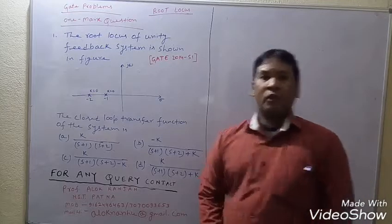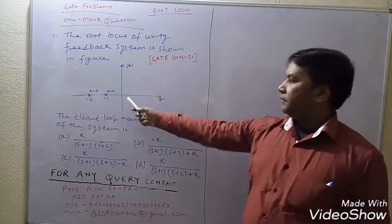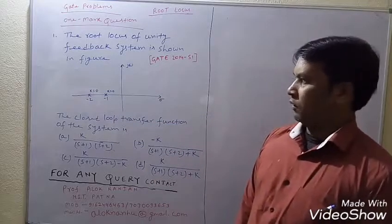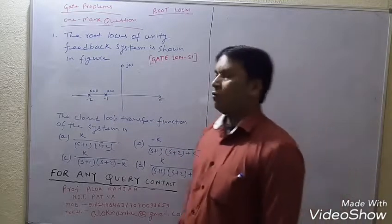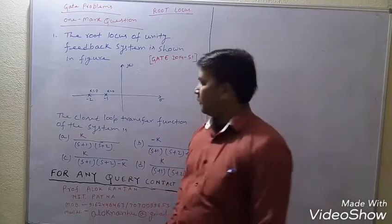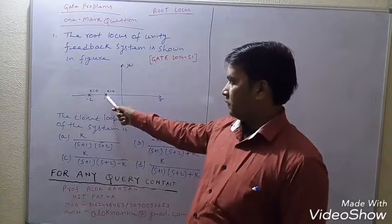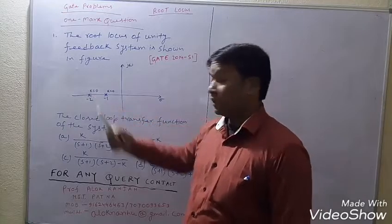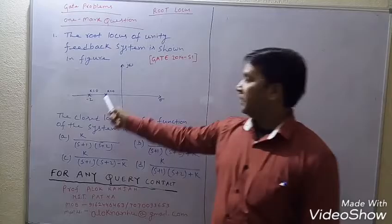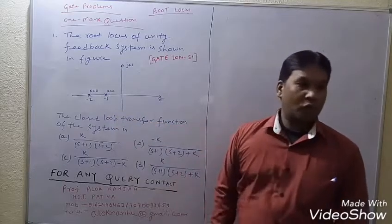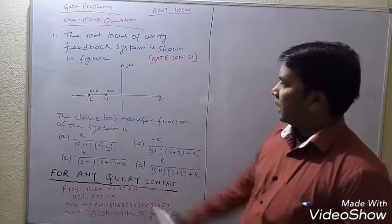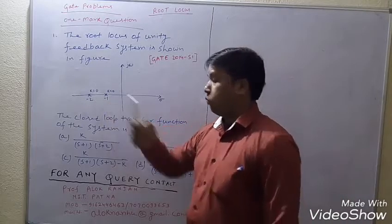Clearly you can see from the root locus plot there are 2 poles. How am I saying there are 2 poles? Because there are 2 crosses, and at the point of the cross the value of K is 0. So there are 2 open loop poles.